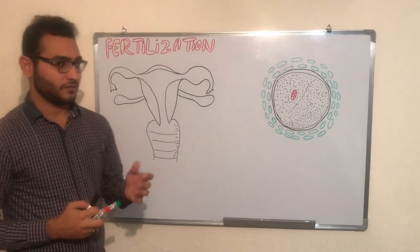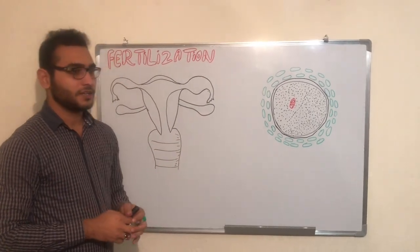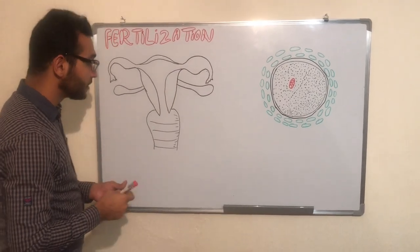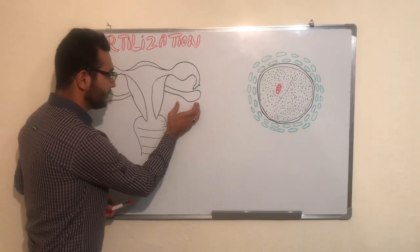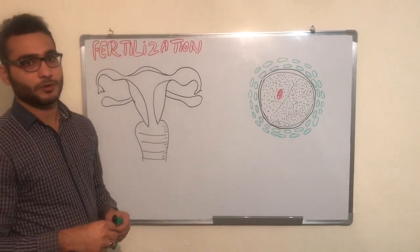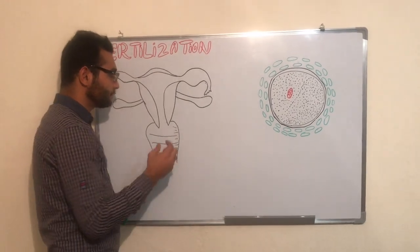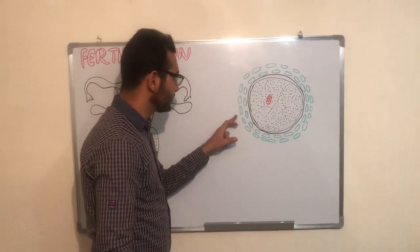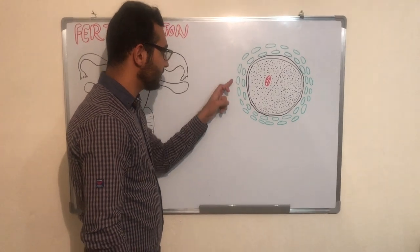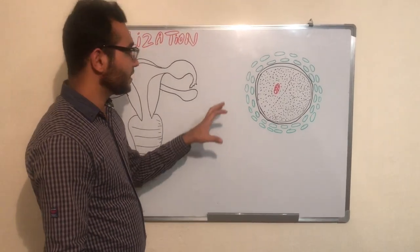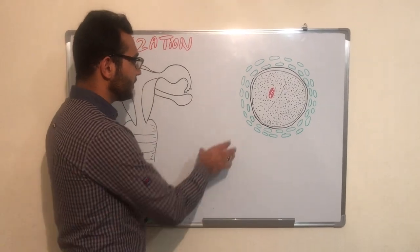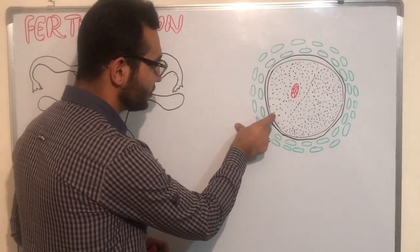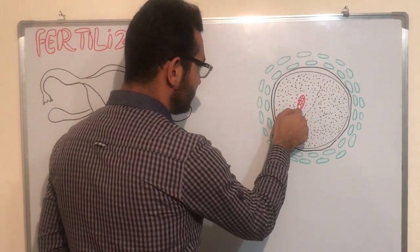We will first discuss how the ovum reaches the ampulla region of the fallopian tube. In the ovary, the main function is to produce the ovum. The ovum has cells outside the membrane called the corona radiata cells, and the layer surrounding it is called the zona pellucida. Inside is the oocyte membrane, cytoplasm, and nucleus.